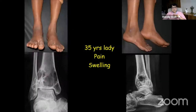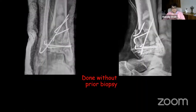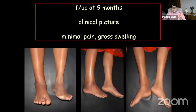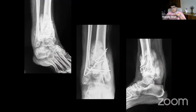This 35-year-old lady had a very classical giant cell tumor appearance — classical soap bubble appearance, narrow zone of transition, distal tibia. The surgeon did a curettage with multiple bone grafts. At nine months the swelling reappeared, and when she presented to us, this was a high-grade osteosarcoma.